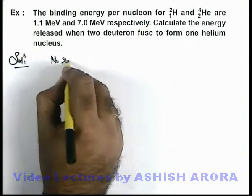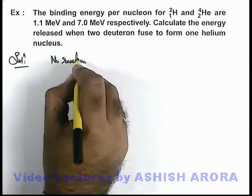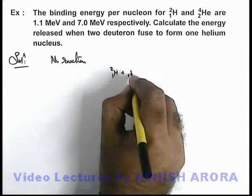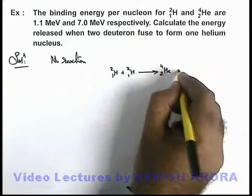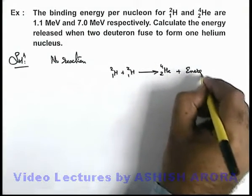Now in this situation, if we use the nuclear reaction for fusion, the reaction can be written as ²H + ²H gives ⁴He plus the amount of energy which is released.